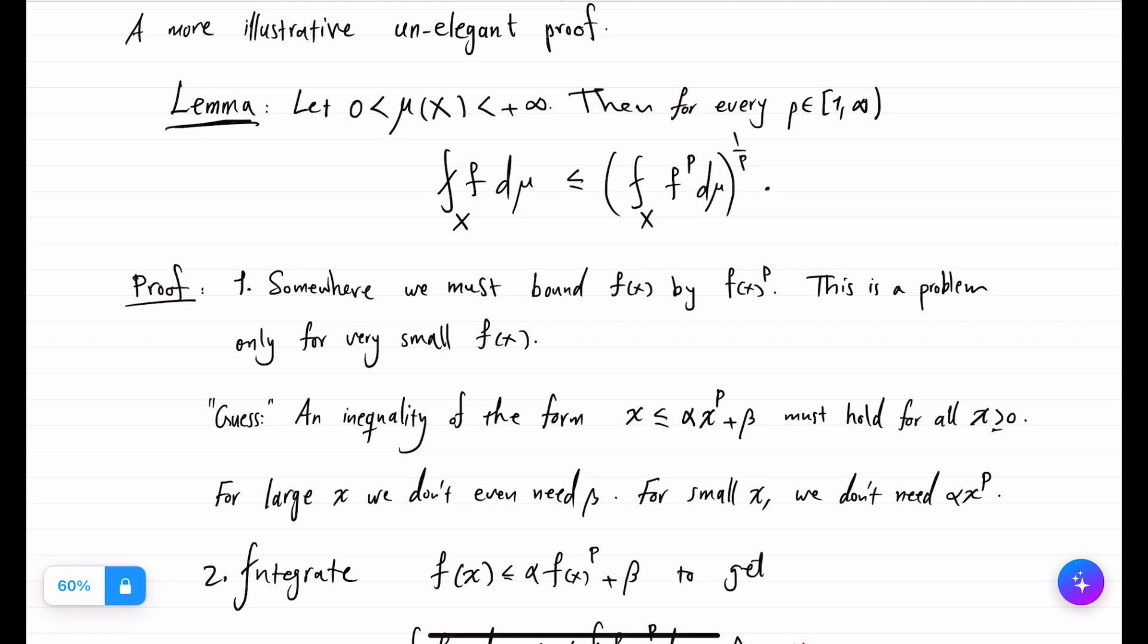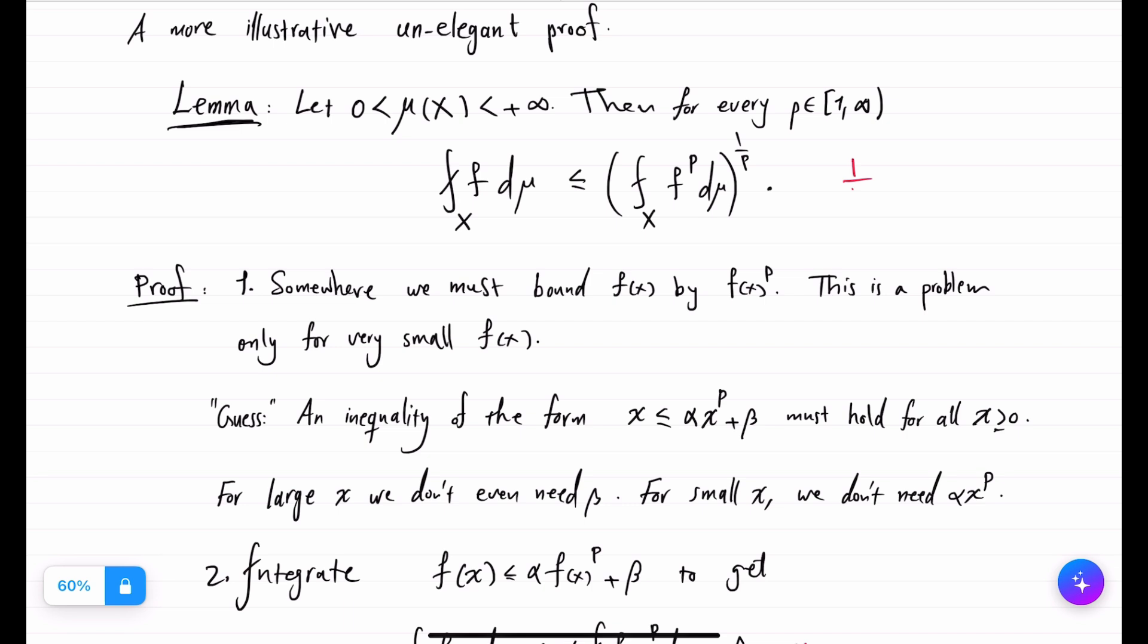Even if you apply this to the counting measure, it's still interesting. So this is saying that the average of n numbers, positive numbers, is less than averaging pth power of those numbers and then taking pth root. This lemma is actually the more often used version of Hölder's inequality because we want to show, for instance, if you have an Lp function on a bounded set in R^n, then f belongs to a smaller Lq if q is smaller than p.